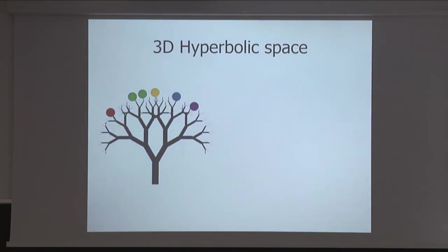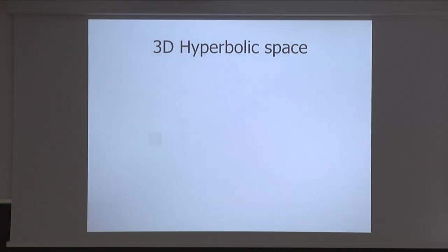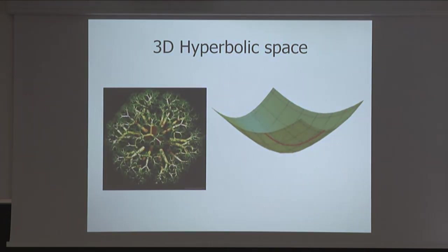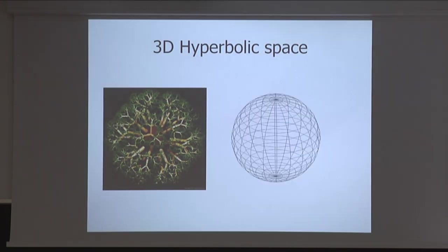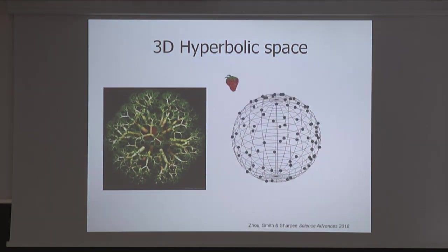Now I'm going to visualize. We want to find points in the 3D hyperbolic space — instead of a 2D tree, we go to a 3D tree. The hyperbolic space is difficult to visualize. If this is a 2D hyperboloid, I can squeeze it into a Poincaré disk, and the distance between two points has to be evaluated by going closer to the center. In 3D, instead of a Poincaré disk, we talk about a Poincaré sphere. We use modified multidimensional scaling with a hyperbolic metric to put actual odor molecules into that Poincaré sphere.